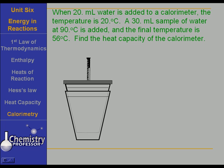Here is a calorimeter. We're going to find its heat capacity by putting 20 milliliters of water in the calorimeter, swirling it around, and checking the temperature — we find it is 20 degrees Celsius. Then we add 30 milliliters of water at 90 degrees Celsius, swirl that around, wait a minute, and check the final temperature and find it is 56 degrees Celsius. We now have enough information to determine the heat capacity of this coffee cup calorimeter.